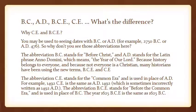We often see the terms BC and BCE and AD and CE. We're more used to seeing BC and AD, but now a lot of books are using BCE and CE. For example, 2750 BC means 2750 years before the birth of Christ, or AD 476 would be 476 years after the birth of Christ.